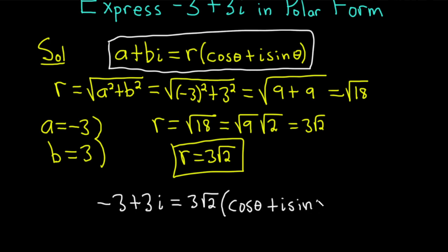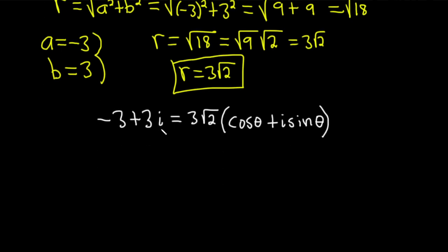Parentheses, cosine theta plus i sine theta. And again, you can memorize the formulas for sine and cosine, or even use the tangent function and draw a picture. I just personally prefer to memorize as little as possible. And then we can distribute the 3 root 2. So this is negative 3 plus 3i equals, we have 3 root 2 times cosine theta plus, and then we have i 3 root 2 sine theta.